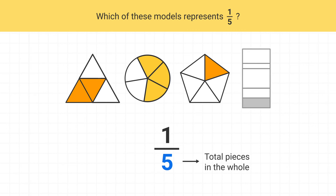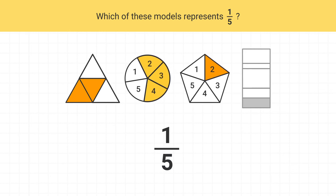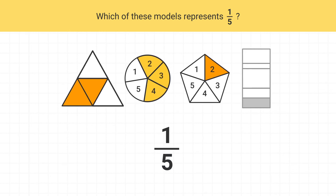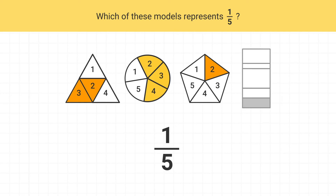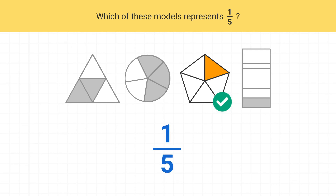We can see that these two models have 5 total pieces, but this one only has 4, so it can't be this model. Now which of these models shows 1 fifth? The first model has 3 shaded pieces, so it isn't this model. But this model has only 1 shaded piece, so this is the model that correctly shows 1 fifth.